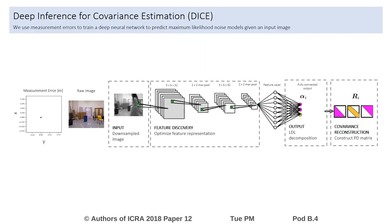Ground-truth measurement covariance labels can be difficult or expensive to obtain. It can be much easier to build a dataset of measurement errors as labels and raw measurements as inputs. To train the network with such a dataset, we use a log-likelihood loss function to maximize the probability of drawing the measurement errors from the predicted distribution.